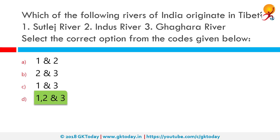Ghagra is a transboundary perennial river originating on the Tibetan Plateau near Lake Mansarovar. It cuts through the Himalayas in Nepal and joins the Sardar River at Brahma Ghat in India. The Indus River originates in the Tibetan Plateau of western China in the vicinity of Lake Mansarovar in the Tibet Autonomous Region.